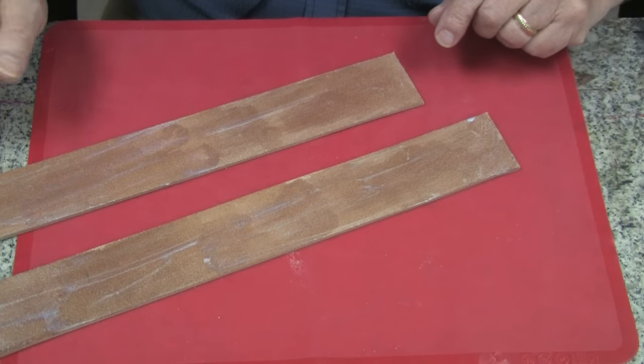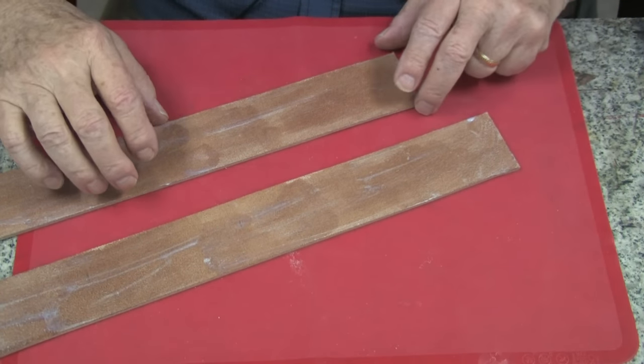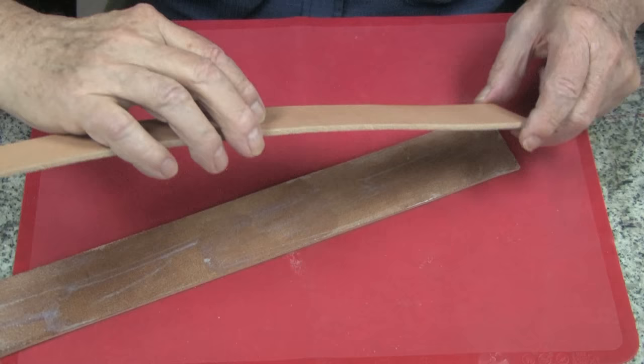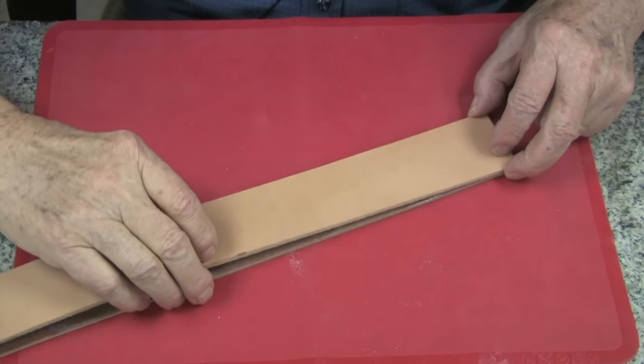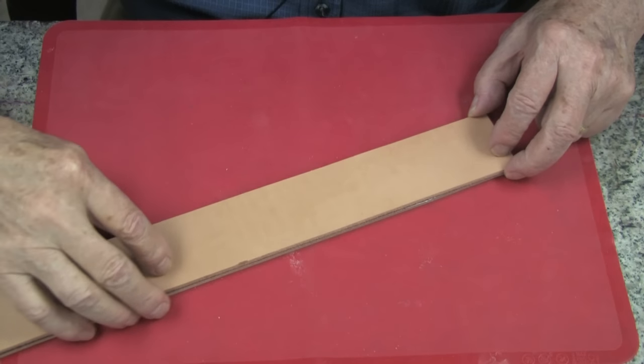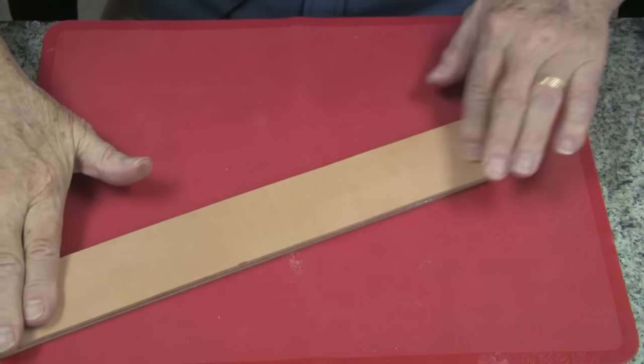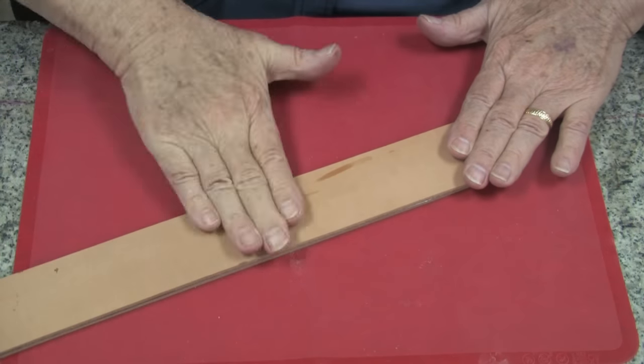We have allowed our cement to dry until it's tacky, and now we can very carefully place the two pieces together. And then we can rub it down well.